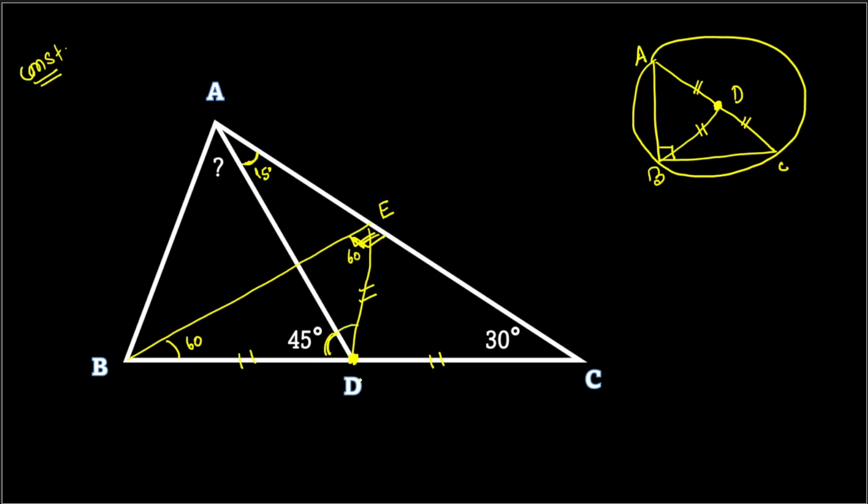Angle ADB is 45 degrees, so angle ADE should be 15 degrees to make it 180 degrees. Now check triangle AED. We have angle at D in triangle AED is 15 degrees, angle at A is 15 degrees. So AED becomes an isosceles triangle with ED equal to EA.